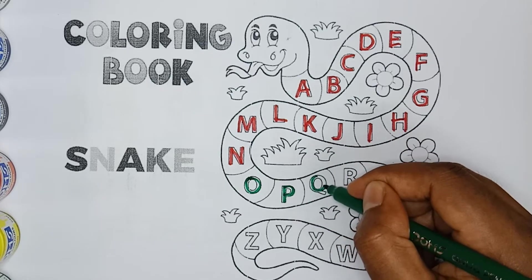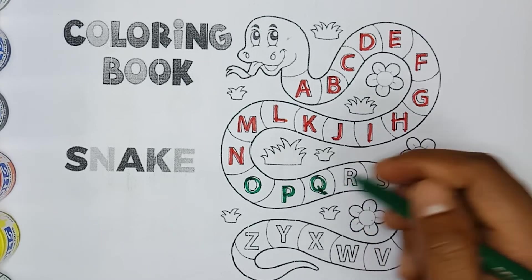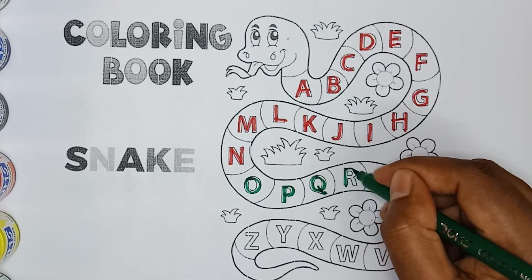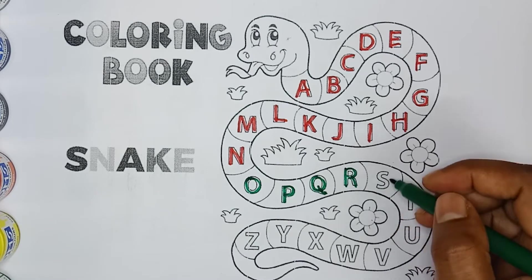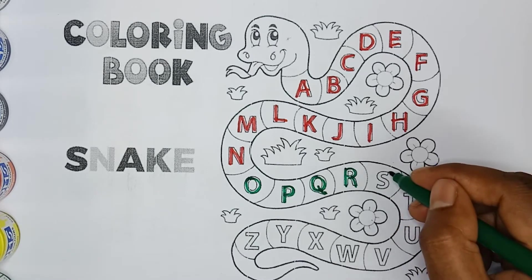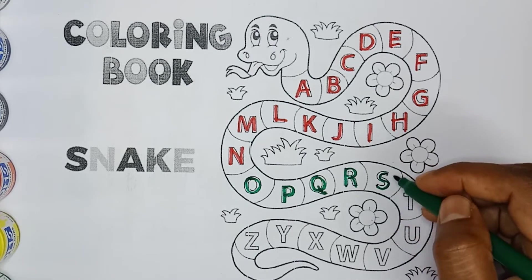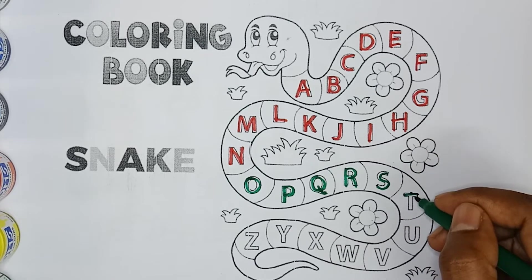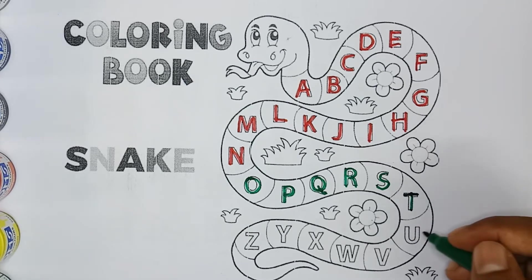Q, Q for queen, green color Q. R, R for rose, green color R. S, S for sun, green color S. T, T for tiger, green color T.